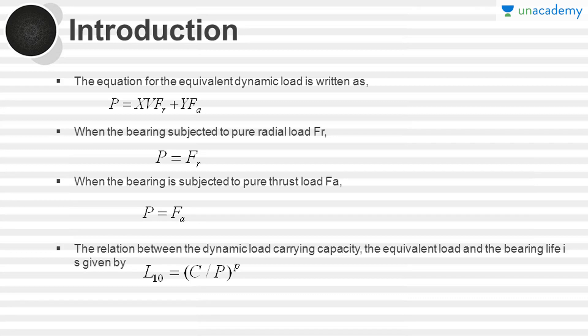When the bearing is subjected to pure radial load, the value of V for actual applications equals 1 and the value of X becomes 1. The value of Y·FA becomes 0 because FA is 0 for pure radial load. Therefore, the equivalent dynamic load becomes P equals FR.